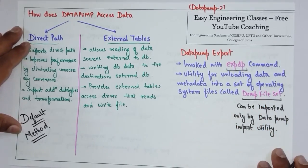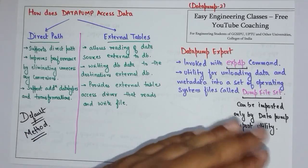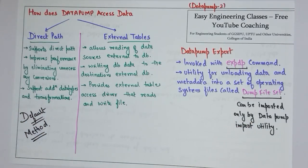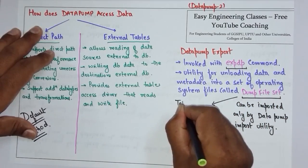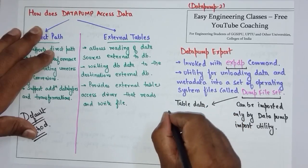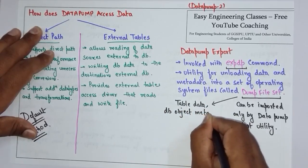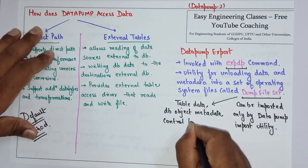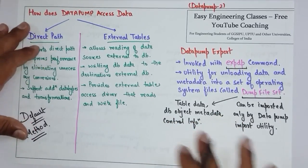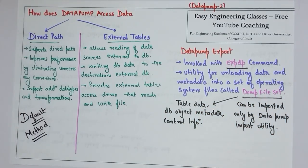Whatever export file Data Pump Export creates — the dump file set — you can import it only with the help of the Data Pump Import utility. This dump file set contains table data, database object metadata, and control information. These are the things present in the dump file set.